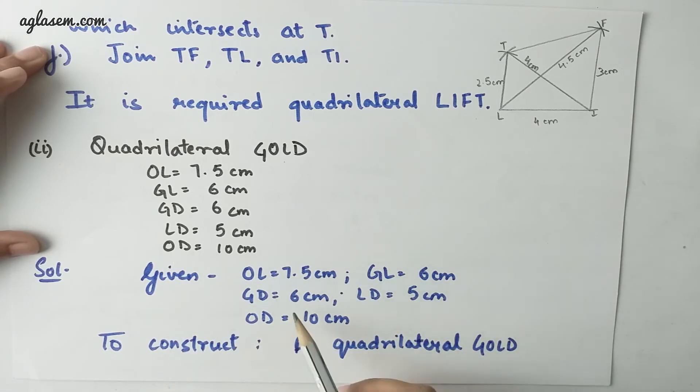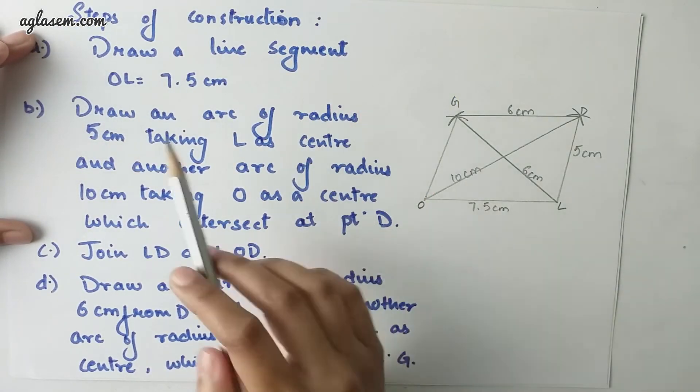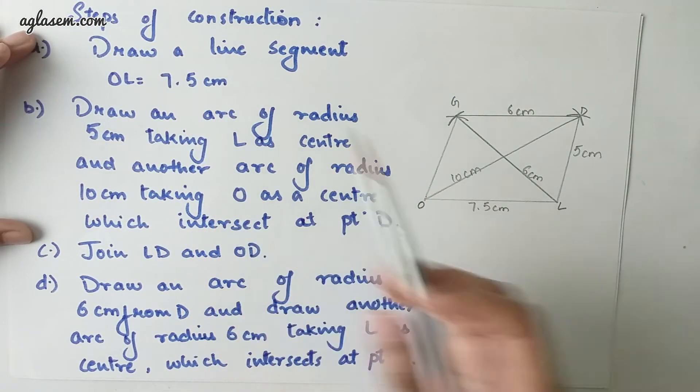All these are the given values. To construct a quadrilateral GOLD we have to follow several steps. Draw a line segment OL that is 7.5 cm.